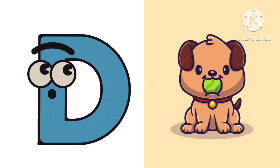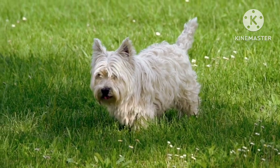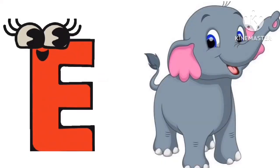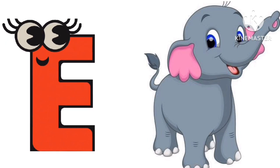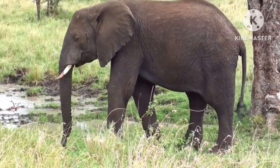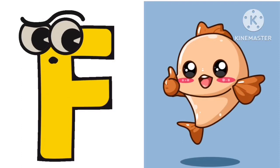D is for Dog. E is for Elephant. F is for Fish.